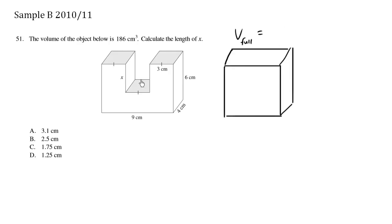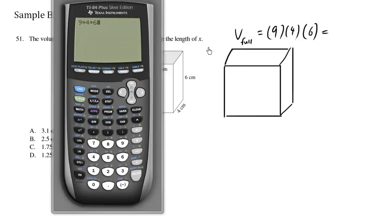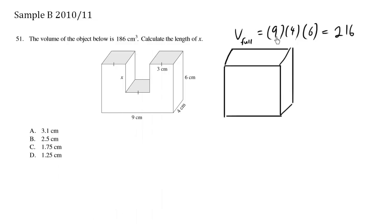So what is length width height? We have 9 times 4, these are all centimeters, times the height which is 6. So this here is equal to 9 times 4 times 6 is 216. So we know that the volume of this big solid box, not including this missing space, is 216 cubic centimeters.